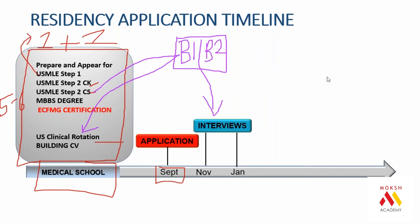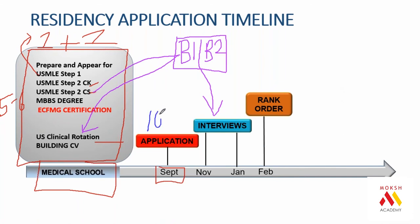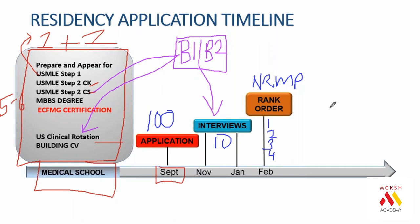Once you have given your interviews — let's say you applied to 200 hospitals and got 10 interviews — you have to inform the body called NRMP. This is the counseling body where you submit your preference list: for example, first choice New York Hospital, second Arizona Hospital, third California, and so on.